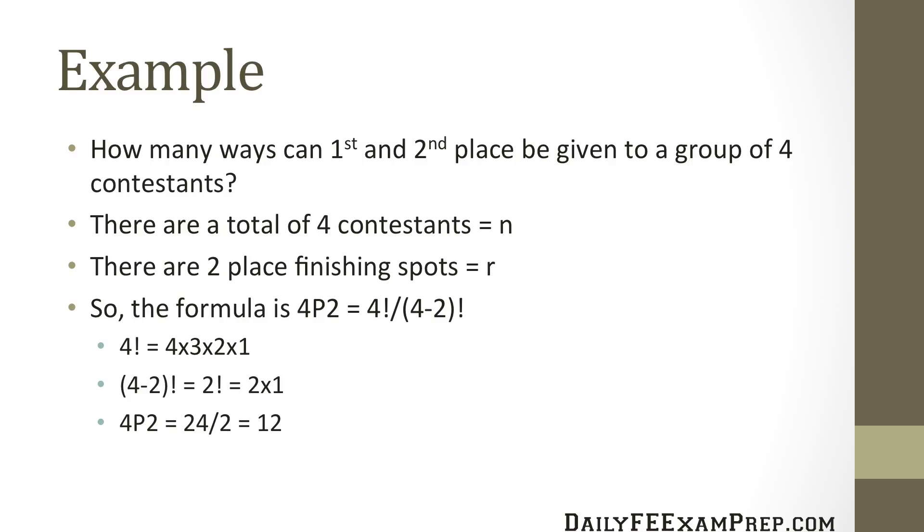So we apply the formula 4P2, which equals 4 factorial divided by 4 minus 2 factorial. So once we multiply that out, 4 factorial is 4 times 3 times 2 times 1, which equals 24. And 4 minus 2 factorial, which equals 2 factorial, is equal to 2 times 1, or 2. So 24 divided by 2, we know that there are 12 different permutations allowed for this particular data set, so a group of four contestants can place in that particular order, first or second place, 12 different ways.